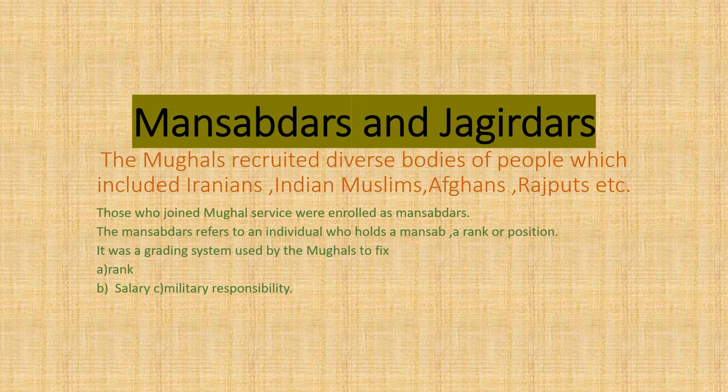A new term in this chapter is Mansabdars and Jagirdars. We have previously done about Iqtas and the Mughals. The Mughals recruited diverse people including Iranians, Indian Muslims, Afghans, and Rajputs to work under them. Those who joined the Mughal service were enrolled as Mansabdars. A Mansabdar refers to an individual who holds a rank or position. The Mansabdar system was used by the Mughals to fix the rank, salary, and military responsibility.